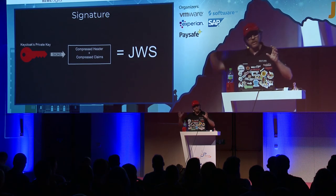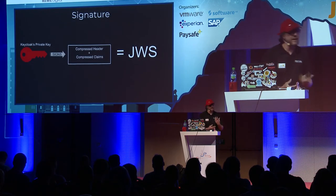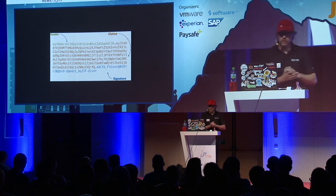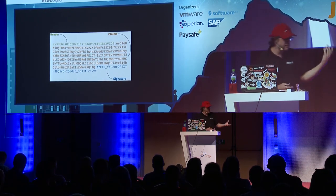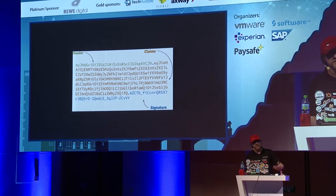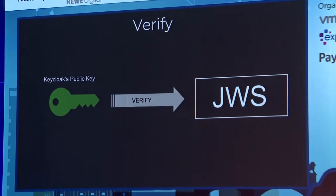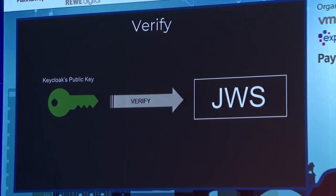Once you have this signed token, any other party receiving it can use the public key to verify it. The token is base64-encoded, so it's really easy to add to an HTTP request — you put it in the Authorization header. A REST service receiving this request checks the headers, grabs the token, retrieves the public key from Keycloak, and verifies whether the token is valid. If it's valid, the request proceeds. That is basically how Keycloak works.